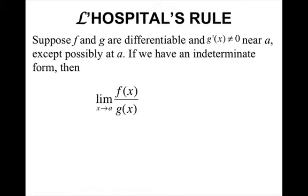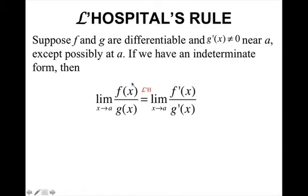What I did was called L'Hopital's Rule. Suppose f and g are differentiable and g'(x) does not equal 0 near a, except possibly at a. If we have an indeterminate form, then we can take the limit as x approaches a and take the derivative of the top and the derivative of the bottom. Every time you do this, you need to indicate you're using L'Hopital's Rule — I put a little 'LH' above the equal sign.